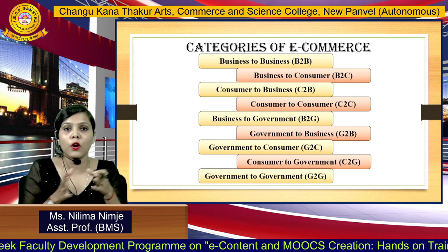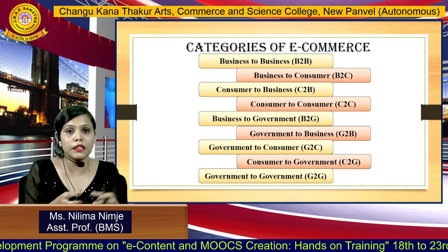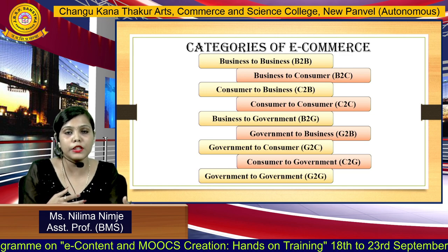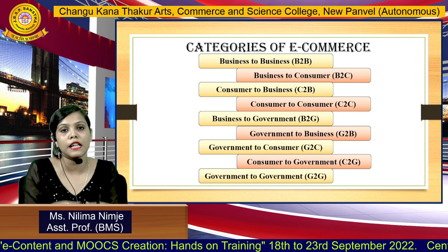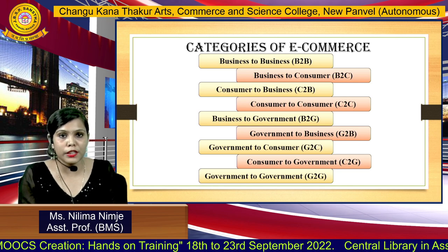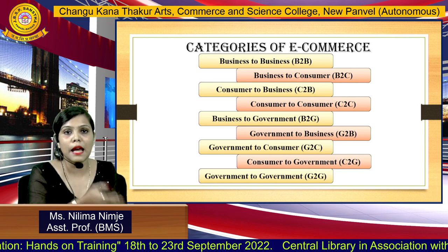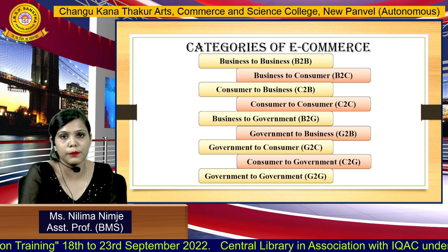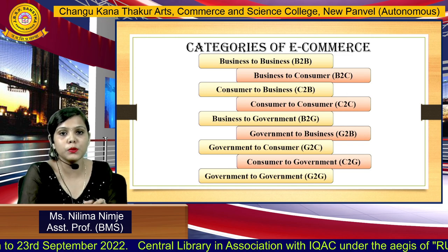Next is the B2C model, Business to Consumer. On one end there is a customer and on the other end there is a business. Customers go on an e-commerce website, make purchases for products and services, while the business gathers information related to the customer. Examples of B2C include FarmEasy, Amazon, and FirstCry.